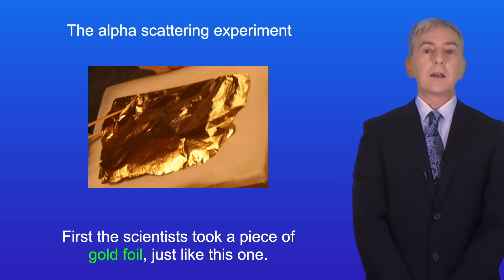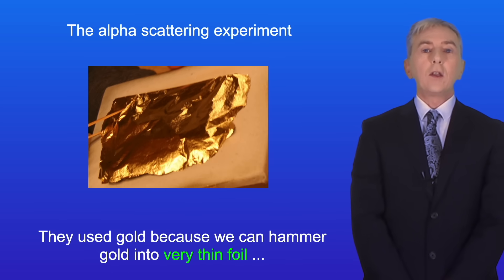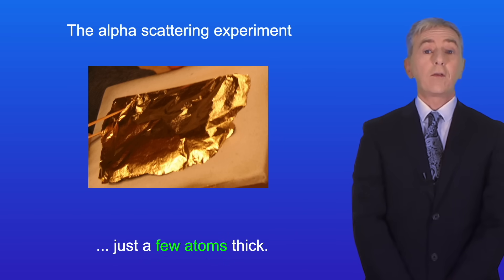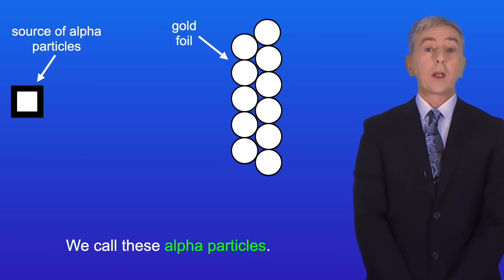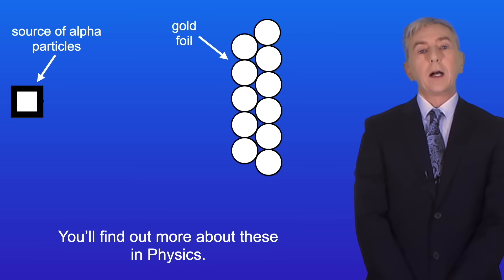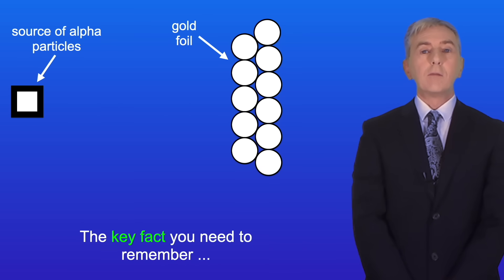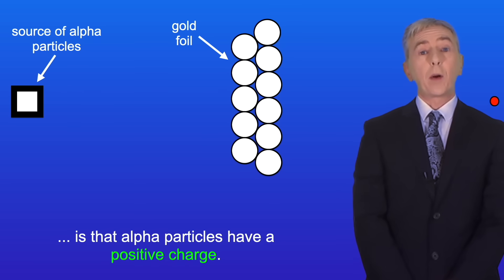First the scientists took a piece of gold foil just like this one. They used gold because we can hammer gold into very thin foil just a few atoms thick. Scientists then fired tiny particles at the gold foil. We call these alpha particles and you'll find out more about these in physics. The key fact you need to remember is that alpha particles have a positive charge.